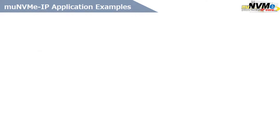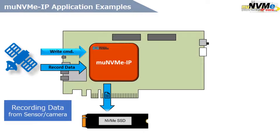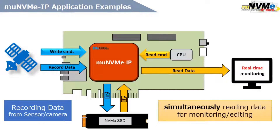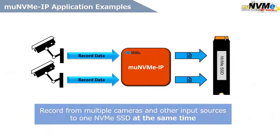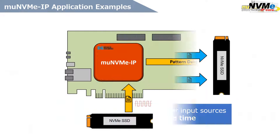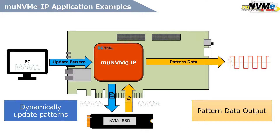The MU NVMe IP core is ideal for applications that require reading and writing at the same time, due to multiple users and simultaneous access requirements. For example, it is useful when you want to record data from sensors or cameras while simultaneously reading it for monitoring or editing. It is also ideal for video recording devices that record from multiple cameras and other output sources to one NVMe SSD at the same time. It can also be applied to a pattern generator that can dynamically update patterns as needed while constantly reading pattern data.